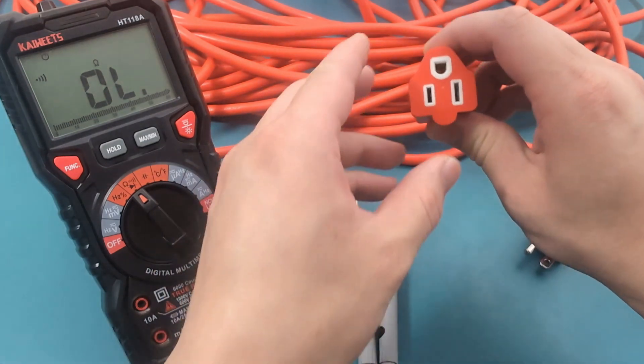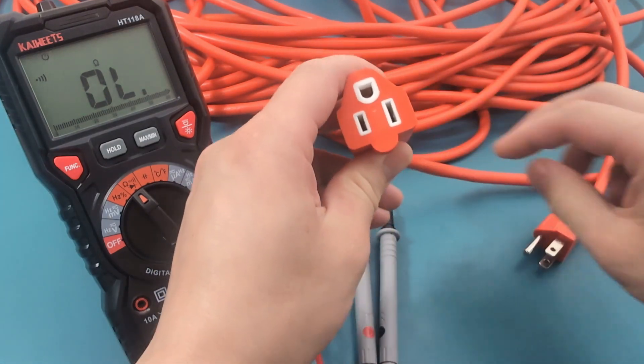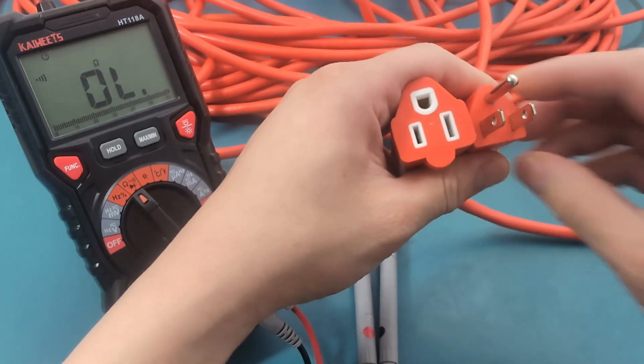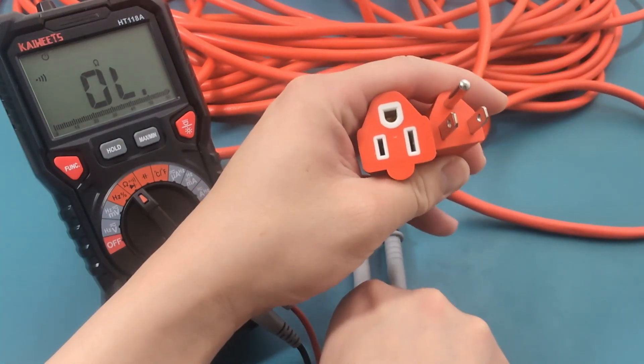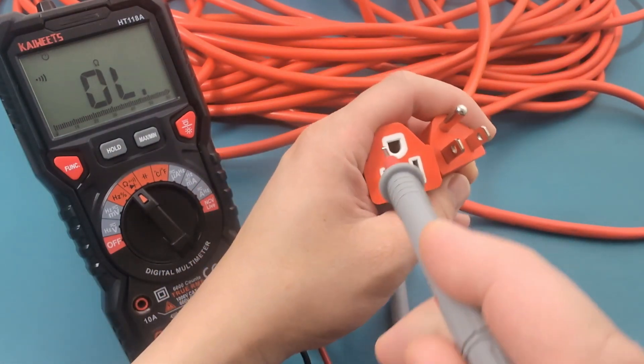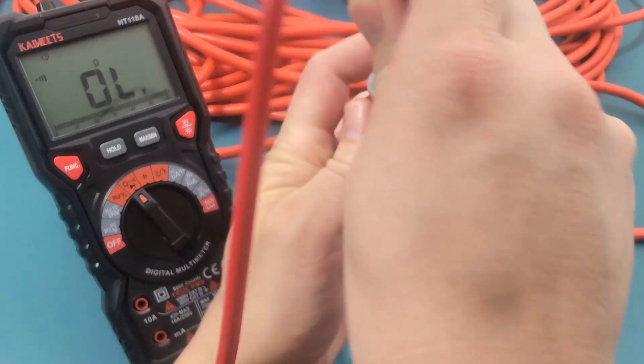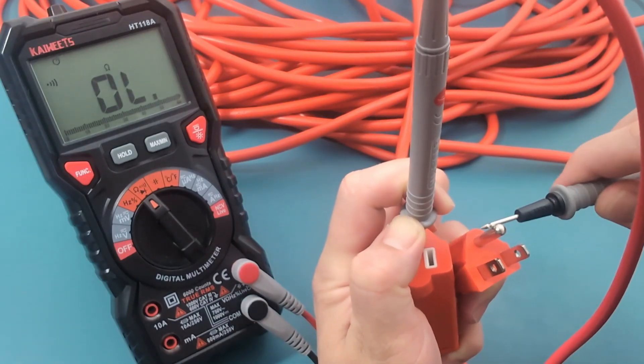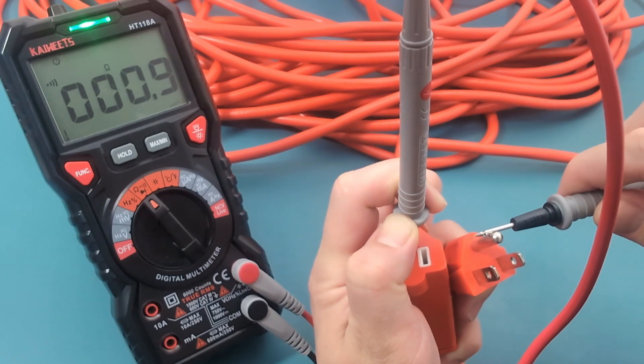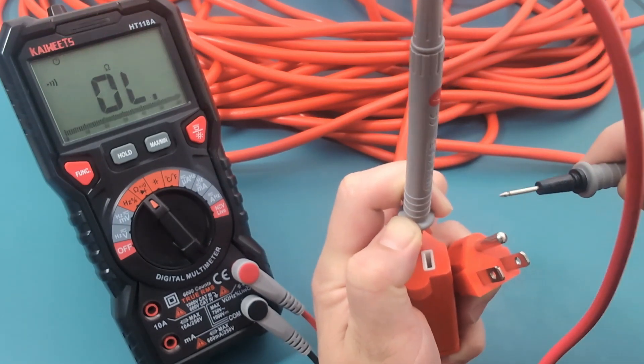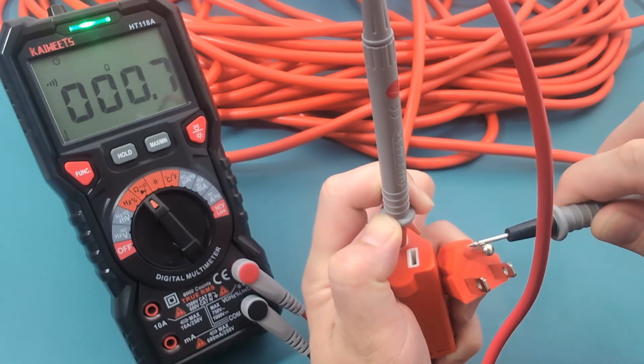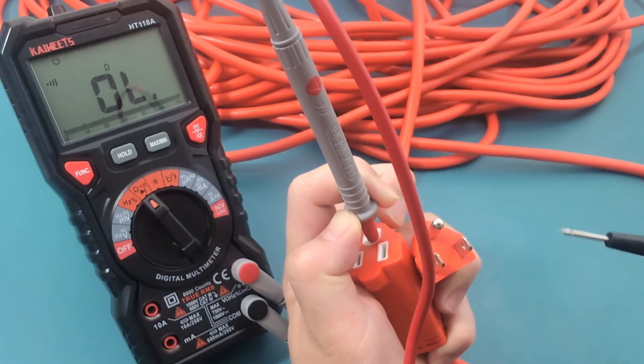Now let's measure the resistance of the cord. Grab both ends of the cord. Start with the ground side of the plug. Connect the multimeter leads to the ground terminals and check the reading. It doesn't matter which side you connect the red and black probes. There is a beep, so there is continuity. A good connection will show a resistance value of around 0.8 ohms. The ground terminals are good.